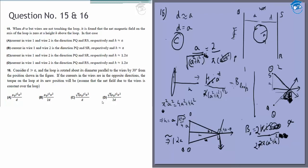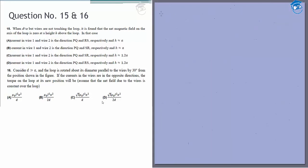Let's move on to question 16, which is based on the same setup. Here the approximation is d much greater than a, and the loop is rotated about its diameter parallel to the wires by 30 degrees. If the currents in the wires are in opposite directions, we need to find the torque at the new position. This is simpler because we are only concerned with the field between the wires.